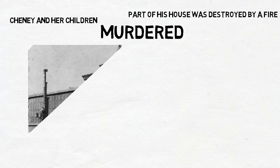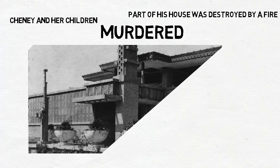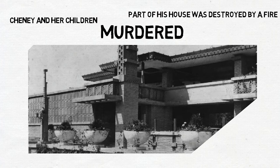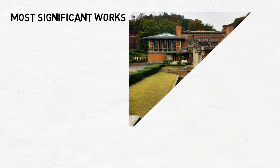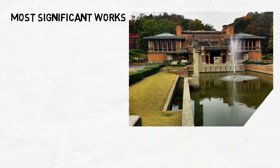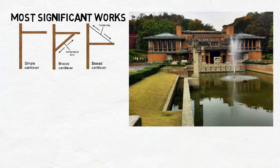Wright was not in the country at the time, as he was working on the construction of the Midway Gardens in the USA. One of his most significant works was the Imperial Hotel, built between 1915 and 1922. Due to its revolutionary floating cantilever construction, it was one of the few buildings that survived the Tokyo earthquake of 1923.